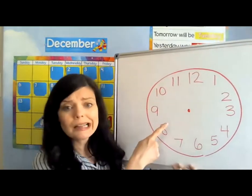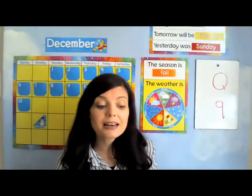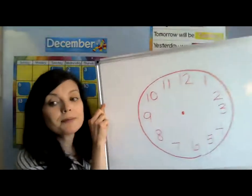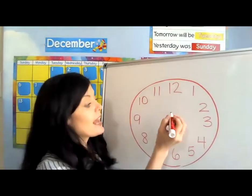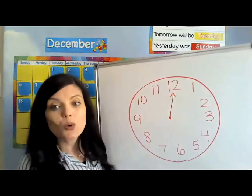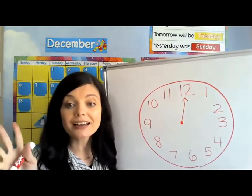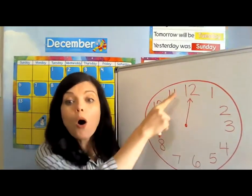But there's something else missing on this clock. Do you know what it is? I'll give you a hint — what are these? These are hands. Did you know that a clock has hands? The two little lines that come out from the middle are called hands. One is long and one is short. Today I'm going to put the long hand pointing to the 12. When the long hand points to the 12, we say o'clock. Can you say that? O'clock. One more time — o'clock.